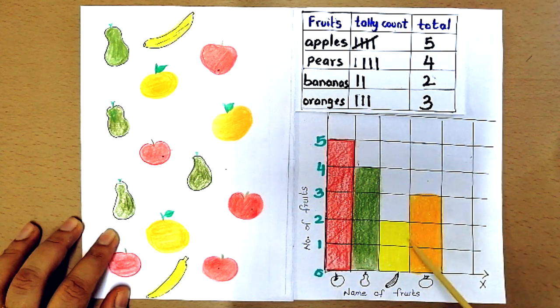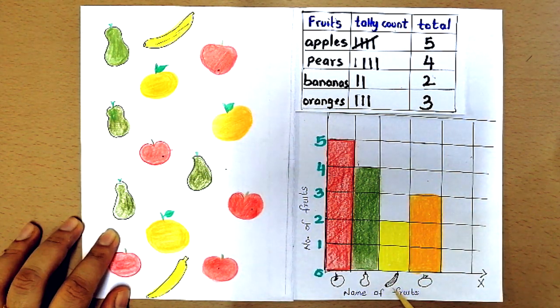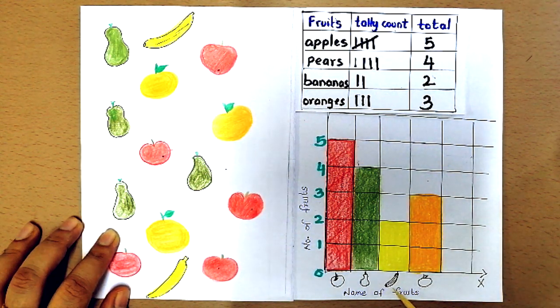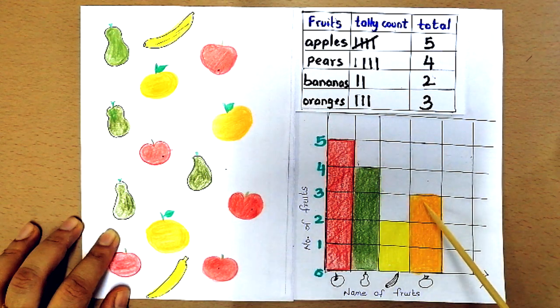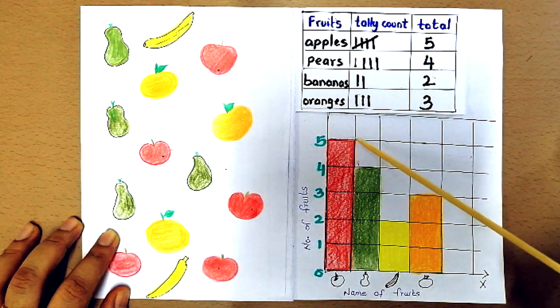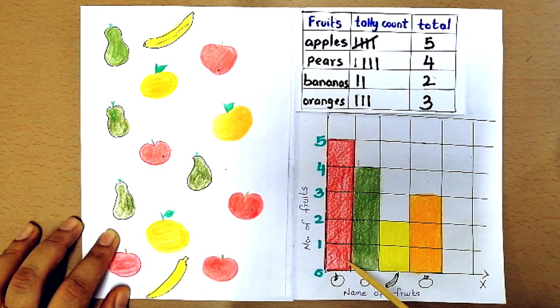The bar graph is now ready. Let me ask you some questions now. Can you tell me which fruit has the highest quantity? You can check the height of the bars and find out the answer. So the tallest one is for apples. So yes, the answer is apples.